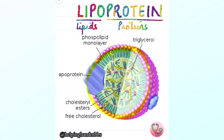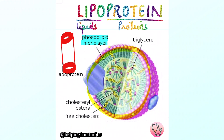The outer covering of a lipoprotein is a phospholipid monolayer. This is very important because lipids are not water soluble, but they have to be transported through blood. The phospholipid monolayer provides an outer hydrophilic covering and an inner hydrophobic covering, so the outside surface is water soluble for easy transport in blood.